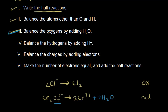Step four: balance the hydrogens by adding protons. The oxidation half reaction doesn't need anything. For the reduction half reaction, by adding water we now have hydrogens on the right side — 7 times 2 gives 14 hydrogens on the right. So we balance that by adding 14 H+ to the left side of the half reaction. Step four is done.